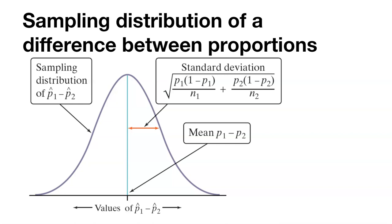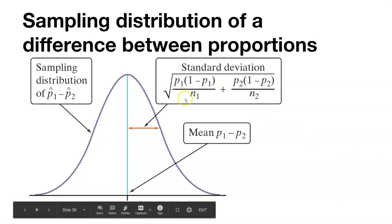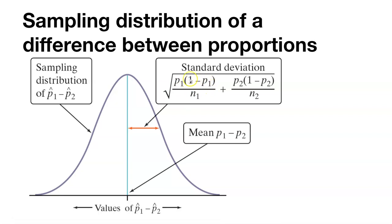We have a mean value, the sampling distribution, and for the standard deviation, we're simply going to sum up—think about when we looked at pooling the standard deviations. That's kind of what we're doing here. We have the standard deviation for population one and the standard deviation for population two, and we're going to combine them to find the standard deviation for this hypothesis test for a difference between proportions.